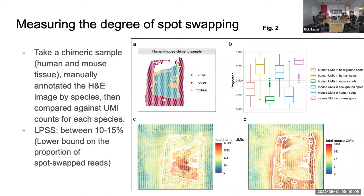They also introduce this metric they call LPSS — lower bound on the proportion of spot swapping. They typically measure this at around 10 to 15%, which is the percentage of reads in one species that are supposed to belong to the other. They call it a lower bound because this only captures cross-species spot swapping — you could also have spot swapping within the same species — so the problem is actually worse than they're able to measure with this metric.